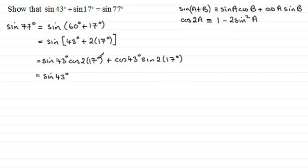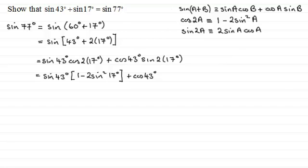So in this part here the a is the 17 degrees. So this is exactly the same as multiplying sine of 43 degrees with 1 minus 2 sine squared of 17 degrees. So that's that one and then we've got plus cos 43 degrees and now this is the sine of 2a, a being the 17 degrees. And the sine of 2a is identical to 2 sine a cos a.